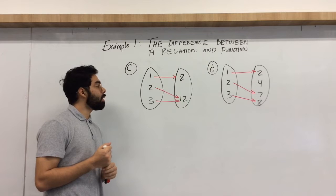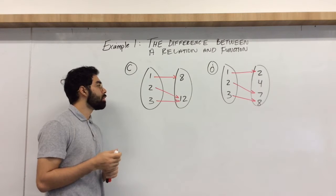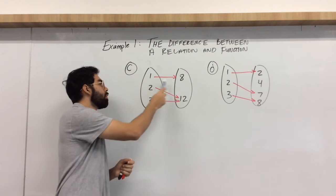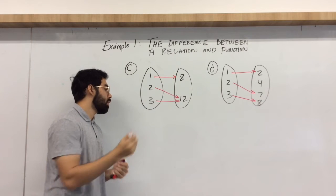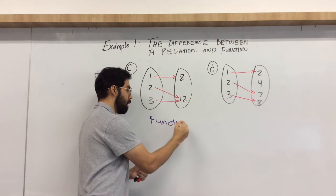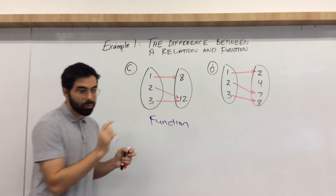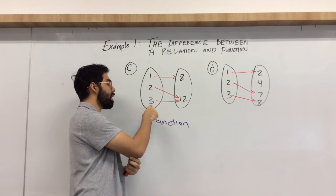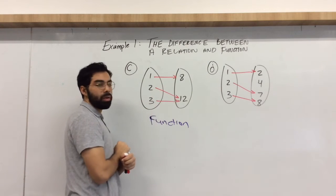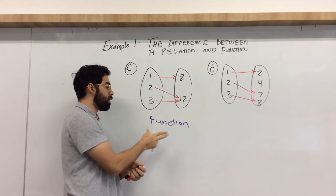All right, so is C a function or not. So when it comes to this, 1 goes to 8, 2 to 12, 3 to 12, this would be a function. The reason being, and again, if you're confused, each x value cannot have more than one y value. So this would be a function.